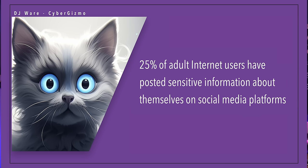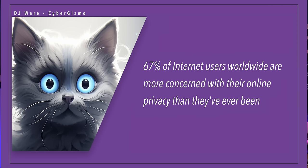Some statistics first. 25% of adult Internet users have posted sensitive information about themselves on social media platforms. And it isn't just that you're publishing information about yourself, but there's also a social map that these companies build up on you — who your friends and relatives are, their likes and dislikes — and that helps them sell ads. 67% of Internet users worldwide are more concerned with their online privacy than they have ever been. These stats are from 2023.